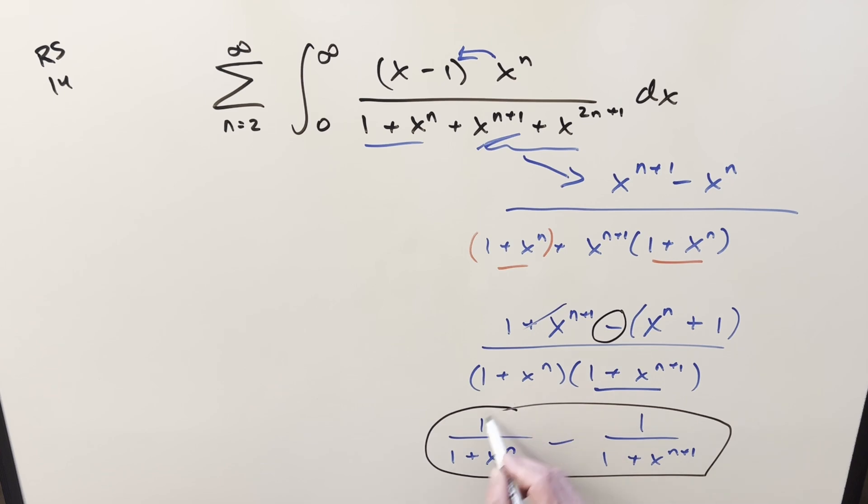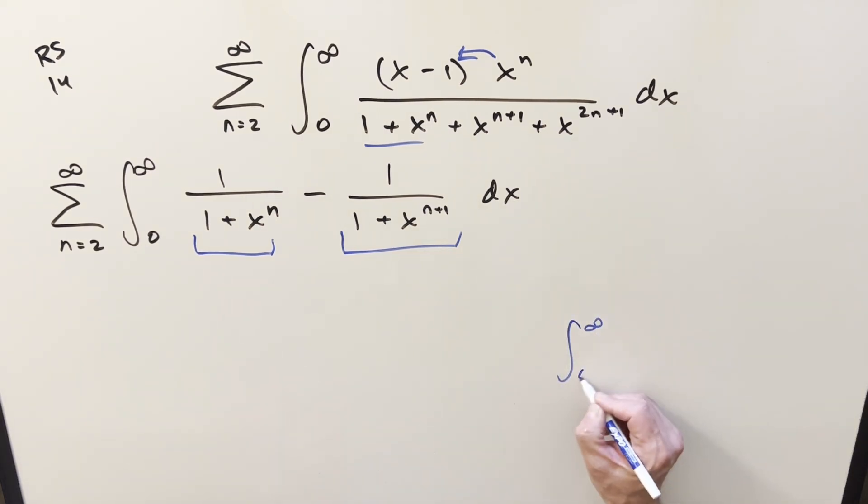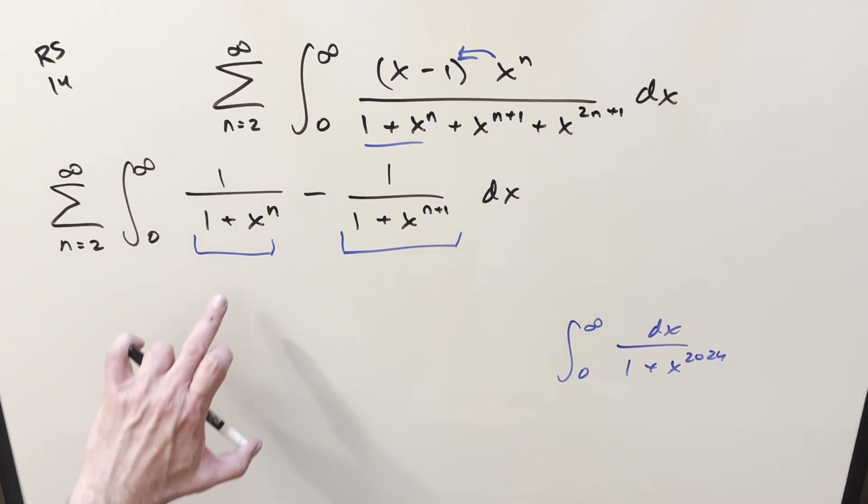Let's take this thing right here, plug it back into our integral, and see if we can integrate this. But now for both these integrals here, you may recognize this. This is something I've done a couple times in recent videos. We had one that was 0 to infinity dx over 1 plus x to the 2024. And notice that both these integrals are in exactly that form.